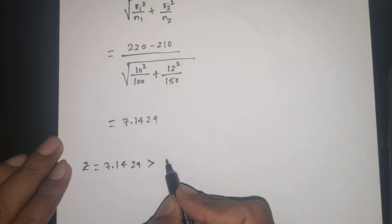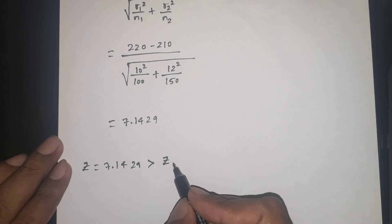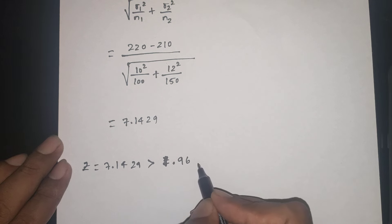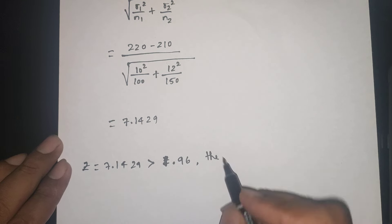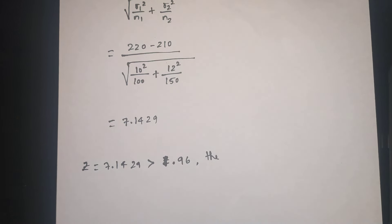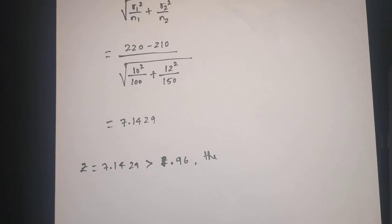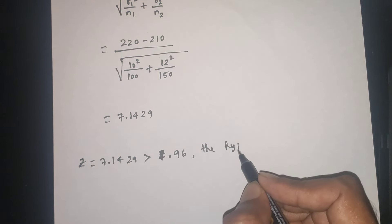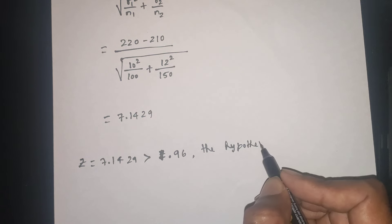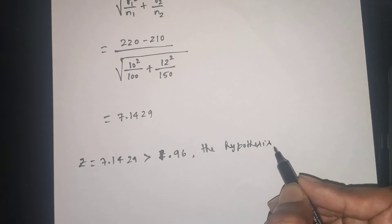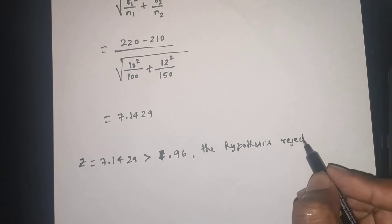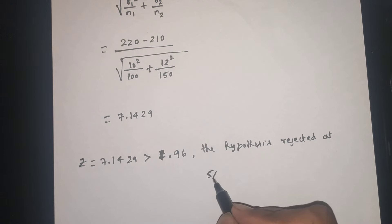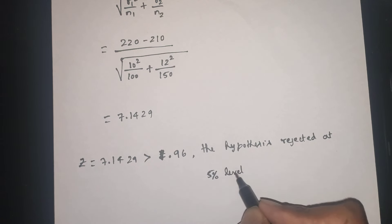Z = 7.1429 is greater than 1.96. Since Z is greater than 1.96, the hypothesis is rejected at 5% level of significance.